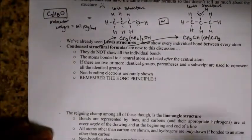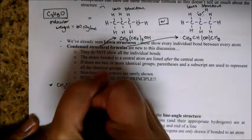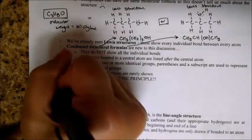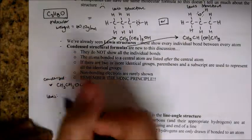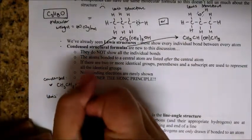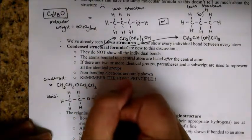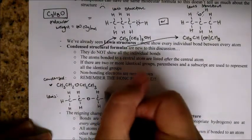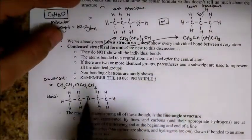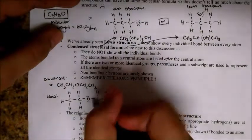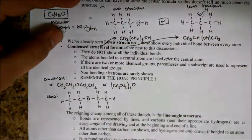Let's do a few more practice problems. Let's say we were given this condensed formula and need to go from it to the Lewis structure. Just remember the HONK principle — carbon likes four bonds. This CH3 should be pretty obvious, then next to a CH2, bound to an oxygen which likes two bonds, and then another CH2 and CH3. You'll also notice that we have two identical CH2-CH3 groups bound to that oxygen, so another way you could write this is CH3CH2 with a subscript of 2, all bound to one oxygen.